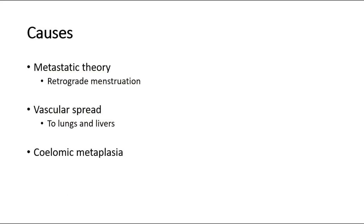There are a few theories which could explain endometriosis. The first theory is the metastatic theory, where it states that there is retrograde menstruation — during menstruation, blood containing endometrial cells passes through the tubes and enters the pelvic cavity, where it may be implanted and continue to grow during each menstrual cycle.